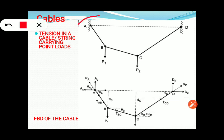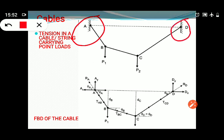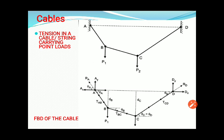In another example, support A is a hinge support and support D is also a hinge support. The support reactions and tensions in portions AB, BC, and CD can be identified. The sag at point B is denoted as d_B, and the sag at point C is denoted as d_C.